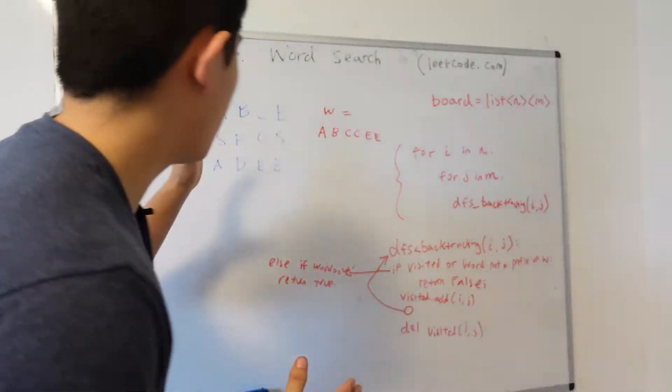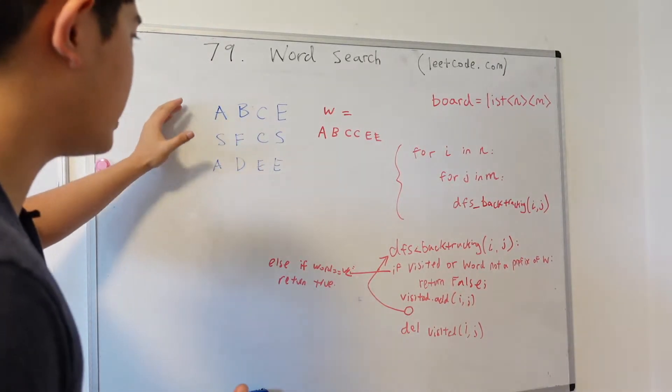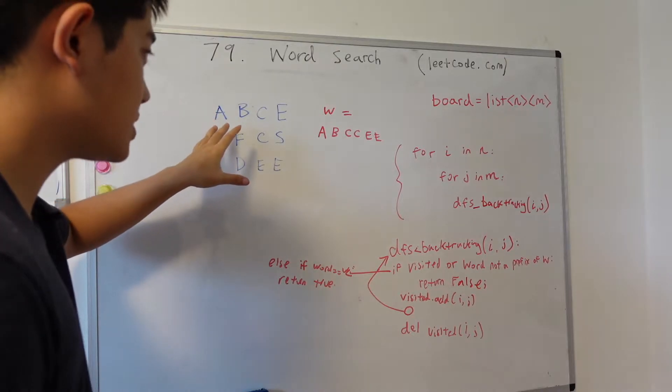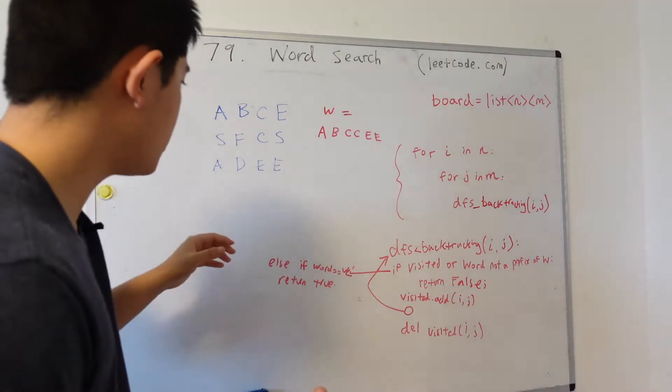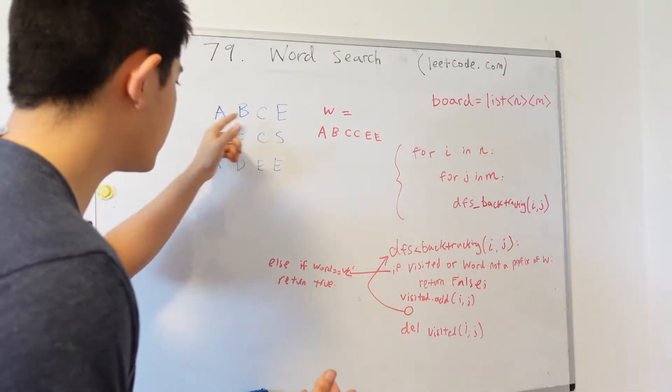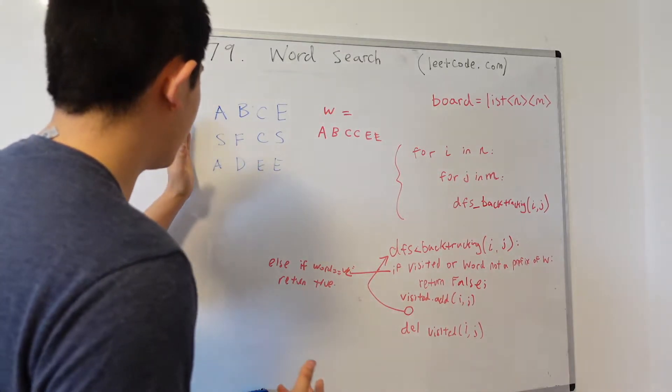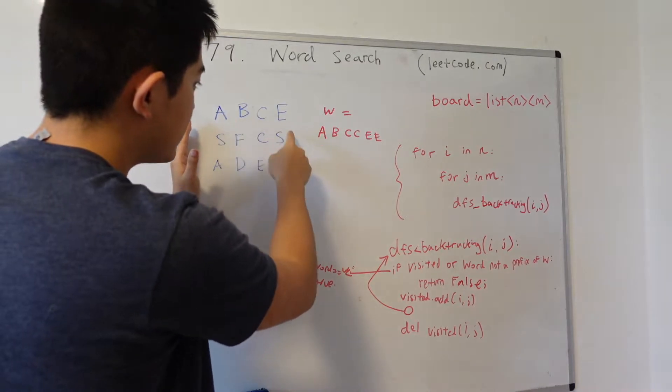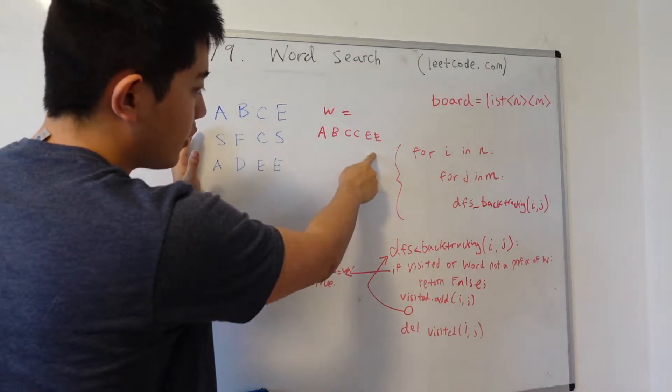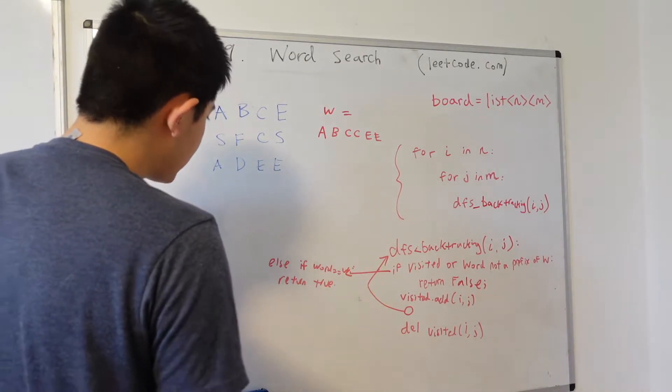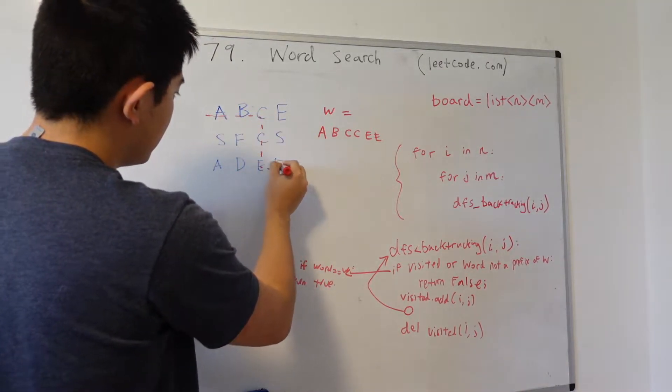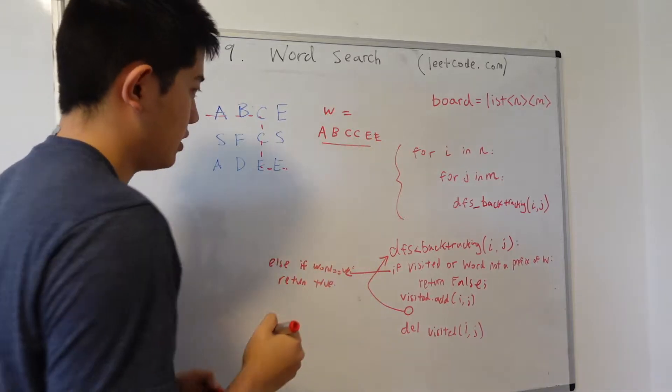So let's get into this problem, word search. We're essentially given an n by m grid or board of letters and we just need to find a path in this board grid where we can only traverse vertically and horizontally such that we get the path equal to the word over here. So for this example, we can see that this path gives us the word here.